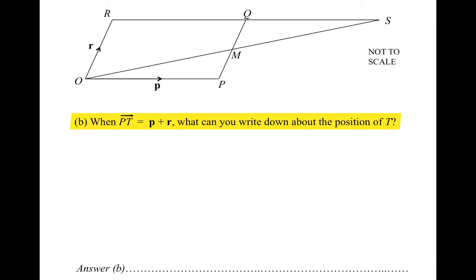The next part says when vector PT equals P plus R, what can you write down about the position of T? It says vector PT equals P plus R, so that means to get from point P to some other point T, you need to do P then R. So from point P, if you do a P you end up across there,